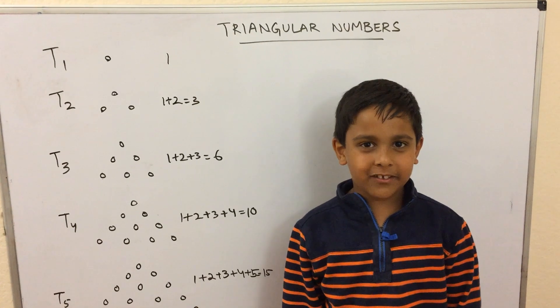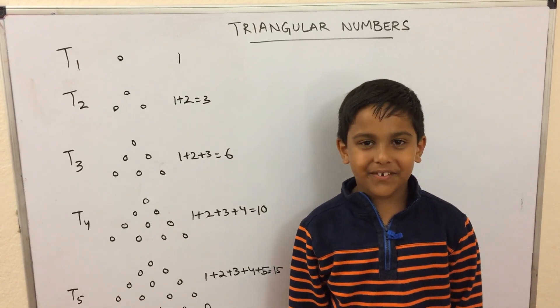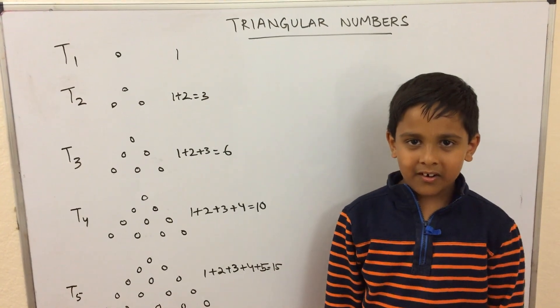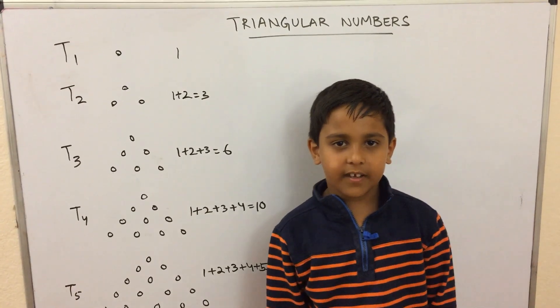Hello everybody, my name is Rohan Nayak-Malek and I'm going to be talking about triangular numbers. So what is a triangular number? A triangular number is the number of objects needed to form an equilateral triangle.